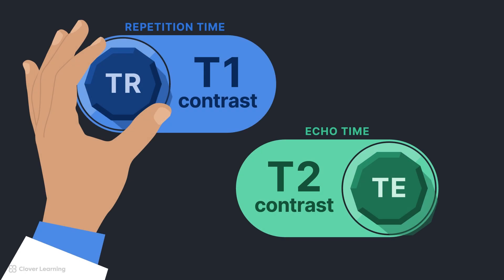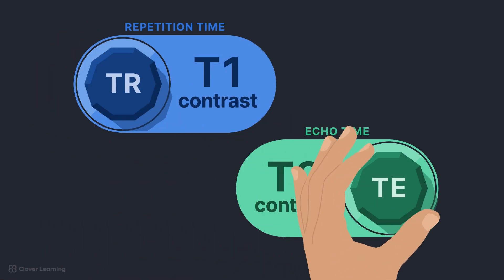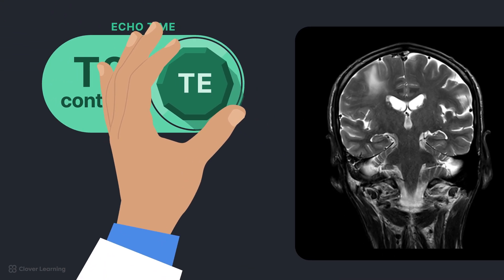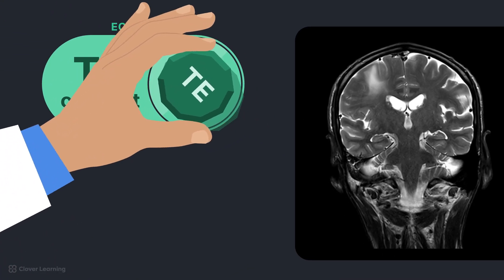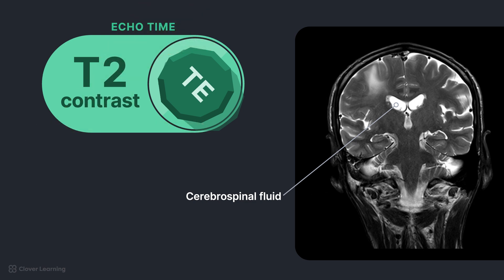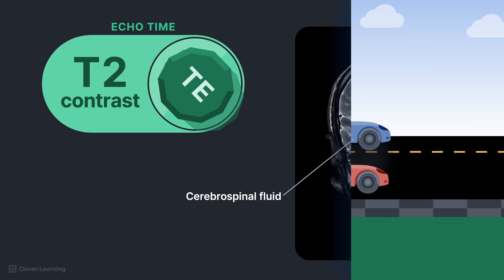TR controls T1 contrast and TE controls T2 contrast. For example, if a pulse sequence has a long TE, tissues with long T2 decay times, like cerebrospinal fluid, will emit more signal and appear brighter on the MRI image. T1 and T2 relaxation and TR and TE contrast parameters are covered in depth in other lessons.